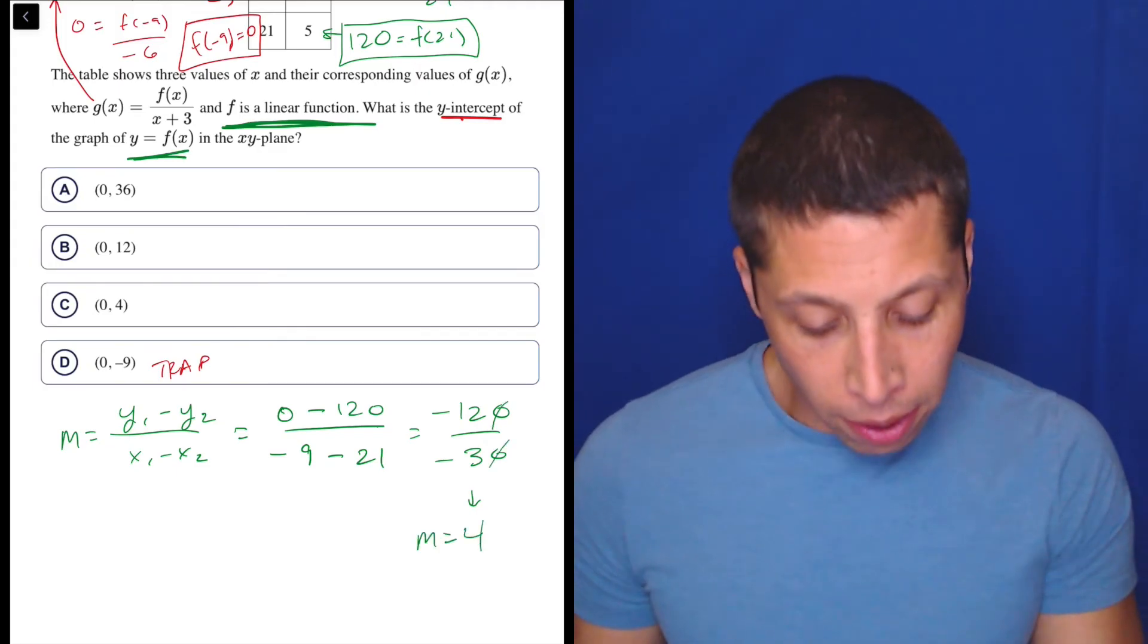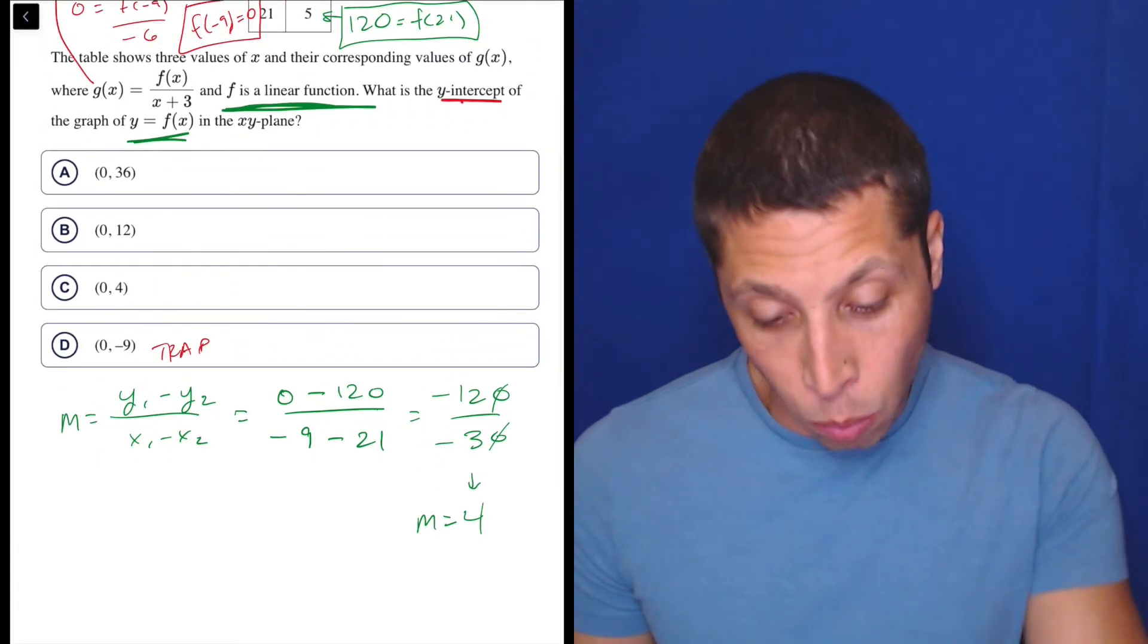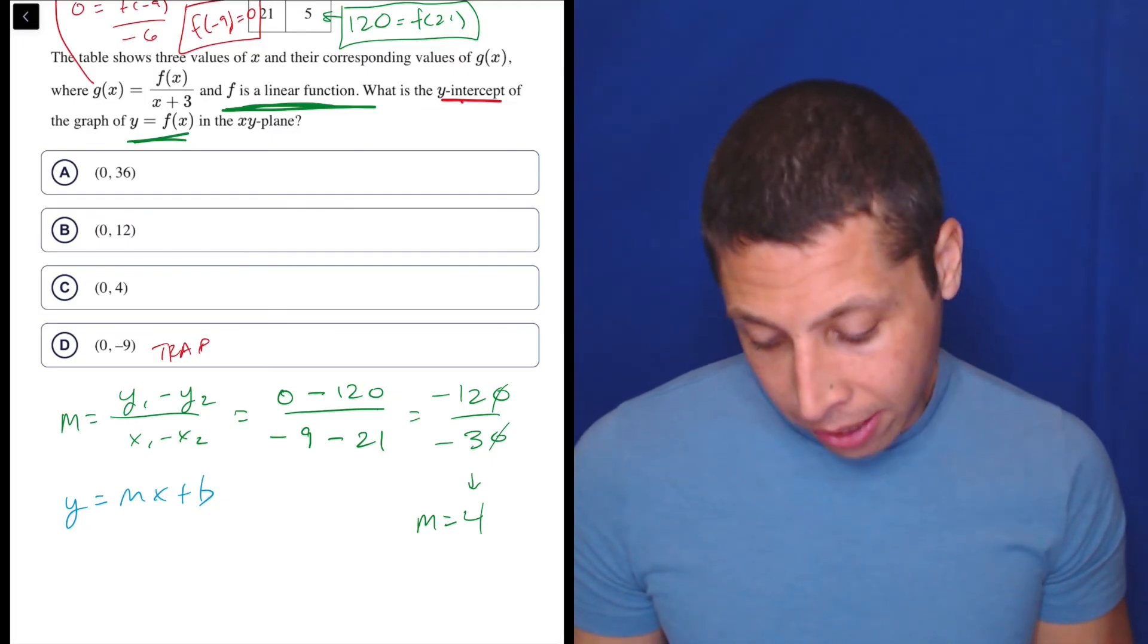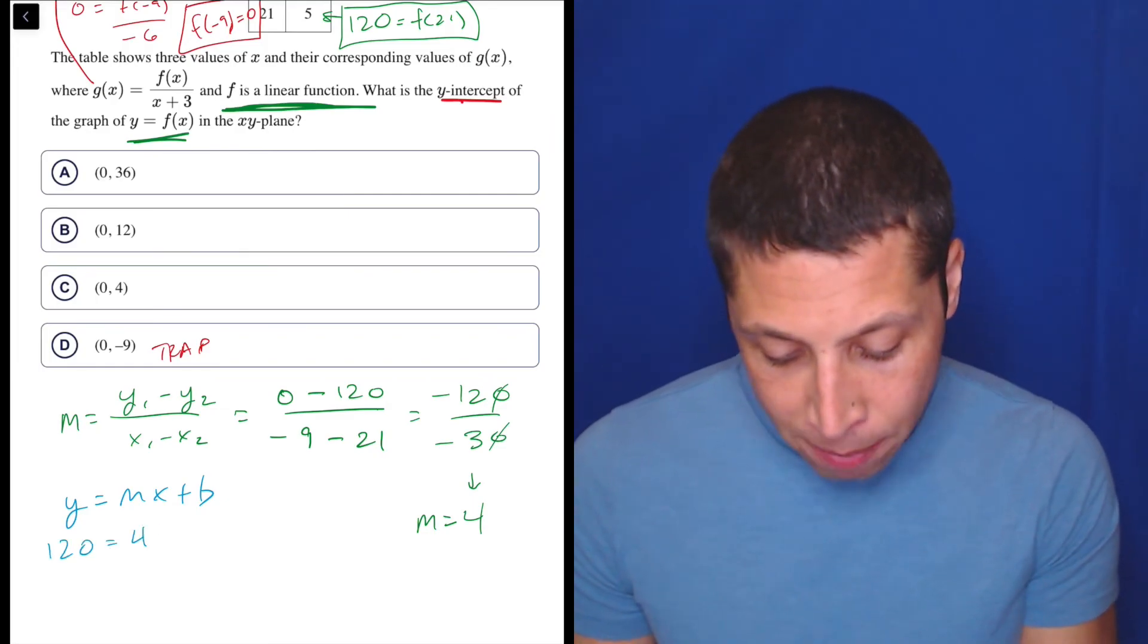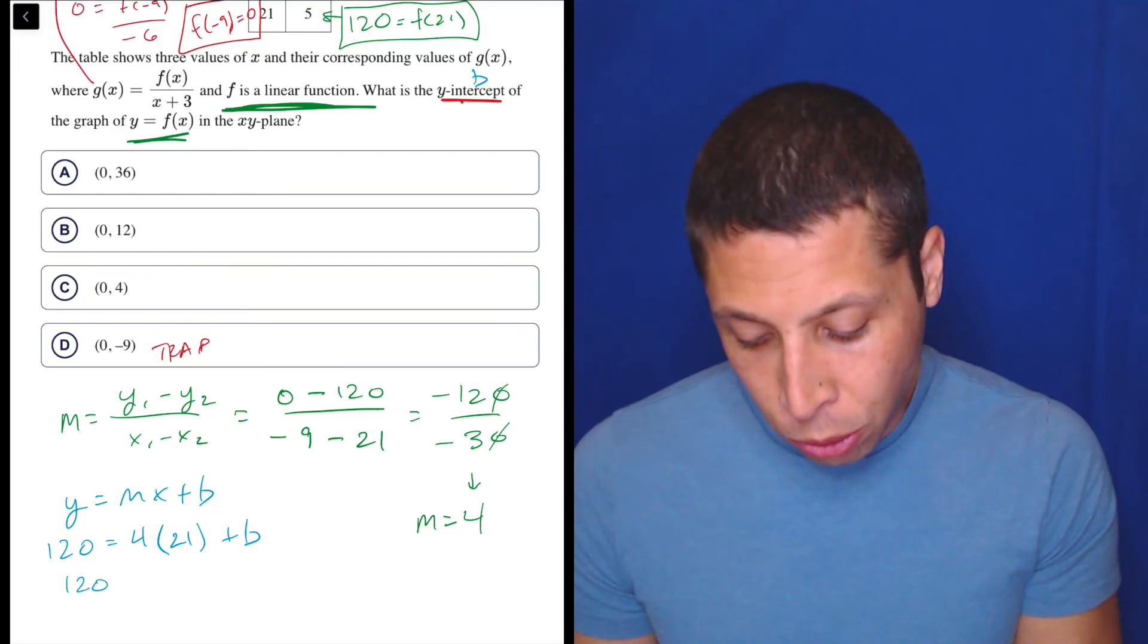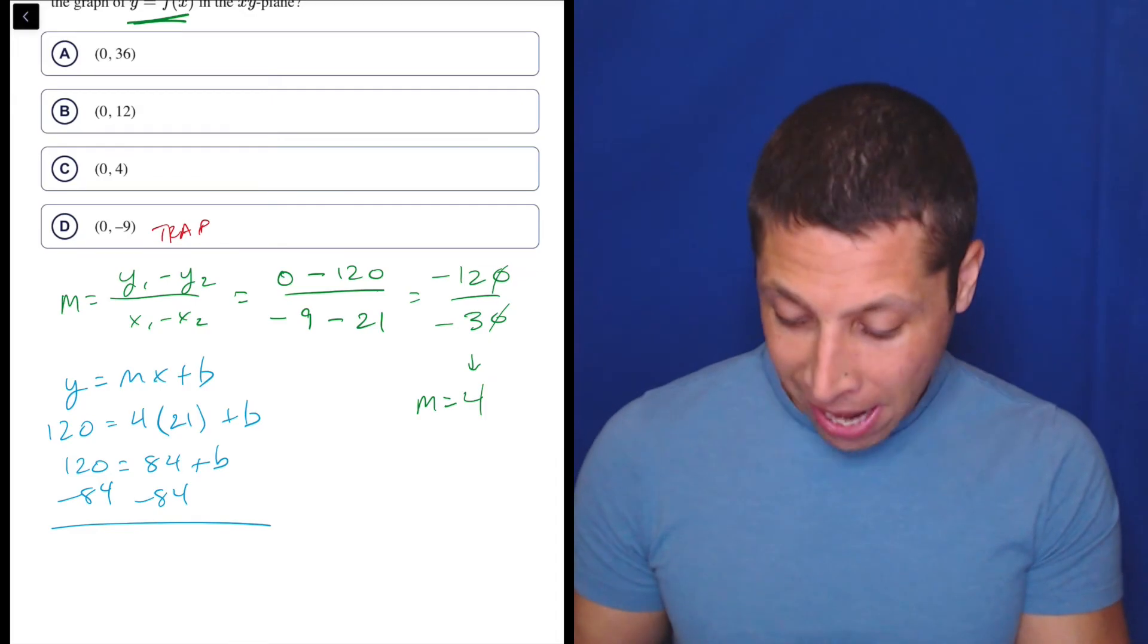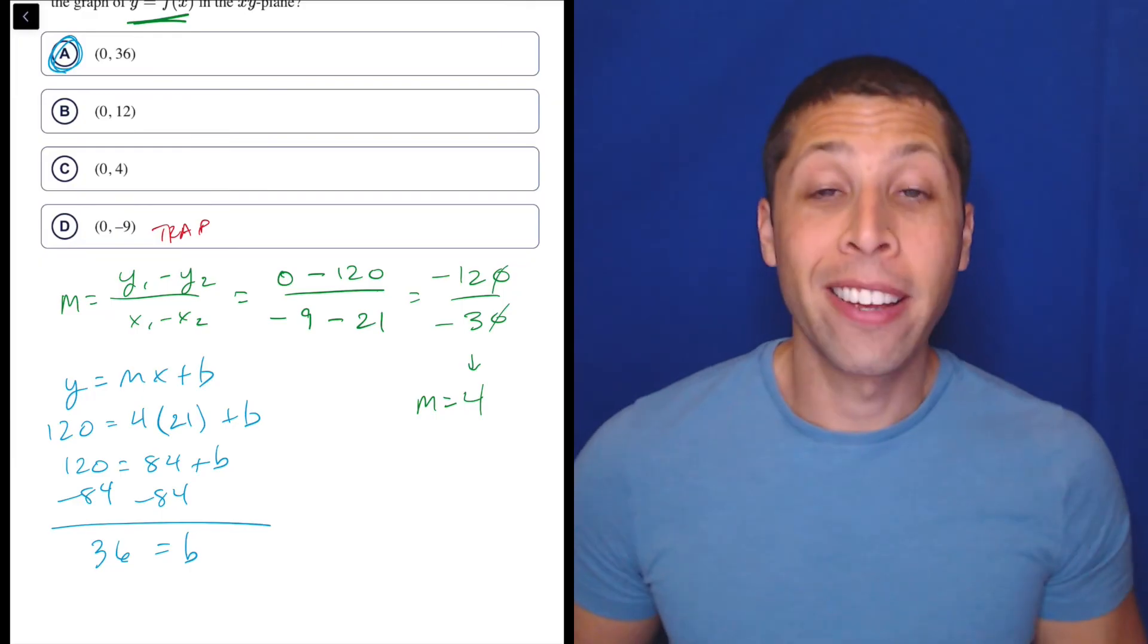So that is the slope of this line, but I want the y-intercept of this line. So at this point, I would just pick one of the points and kind of make a y equals mx plus b equation. So let's do y equals mx plus b and plug points into that equation now. So we have, let's use the 120, I guess. I'd rather not have negative numbers. So 120 is my y, m is 4, 21 is x. We are solving for b, that is what we want. That's the y-intercept. So 120 is equal to 84 plus b. Let's subtract 84 from both sides. And now I would reach for the calculator. 120 minus 84 is 36. And that is equal to b. And that is choice A. And that is the answer.